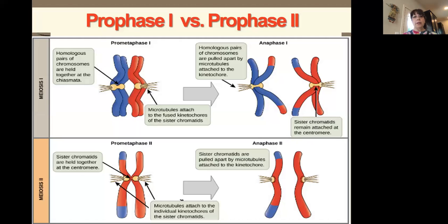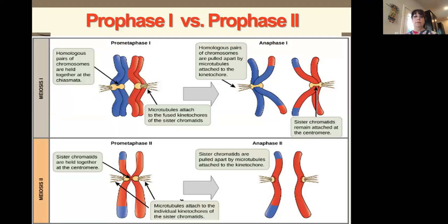Here in prophase two, we have the homologs and there are the kinetochores that are going to attach onto the spindle. Compare this to prometaphase one where homologs attach, versus prophase two where it's just the sister chromatids waiting to see what to do next.